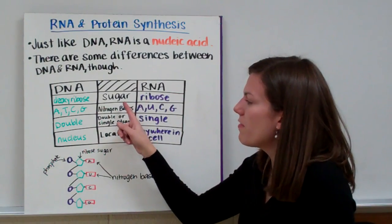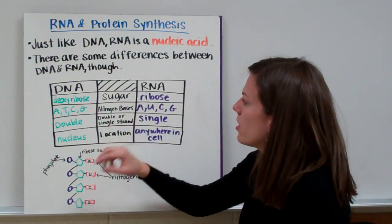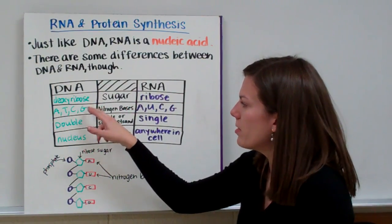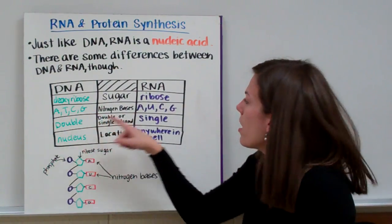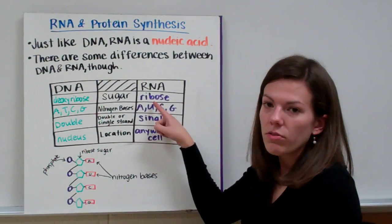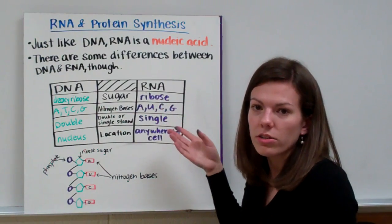DNA and RNA both have a different sugar in their structure. DNA has the sugar deoxyribose. DNA starts with a D, so does deoxyribose. And RNA has the sugar ribose. Ribose starts with an R just like RNA starts with an R.